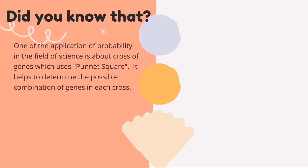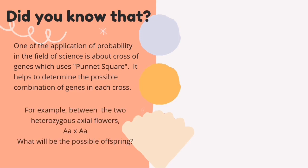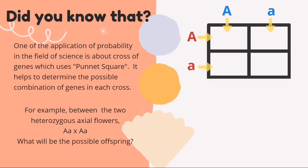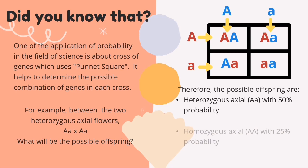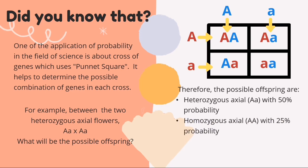Did you know that one application of probability in science is the crossing of genes using a Punnett square? It helps determine possible gene combinations in each cross. For example, between two heterozygous actual flowers, the possible offspring using the Punnett square are: heterozygous actual with 50% probability, homozygous actual with 25% probability, and homozygous terminal with 25% probability.